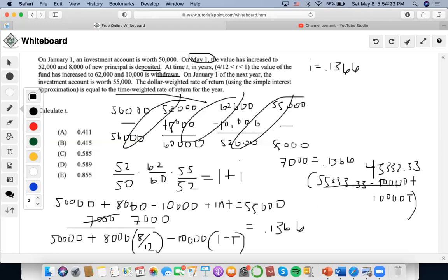Now I'm going to distribute the 0.1366. 0.1366 times $55,333.33 is going to be $6192.53. Then I'm going to distribute this one's going to be $10,000 times 0.1366, so it's going to be $1,366. Now I could move this to the other side and do $7,000 minus $6192.53. And then I'm going to divide that amount by $1,366.